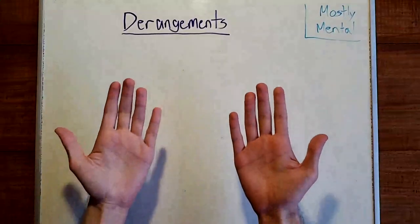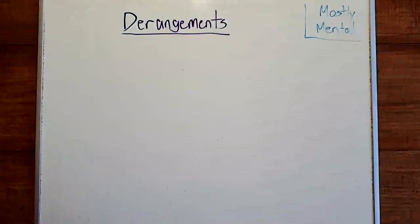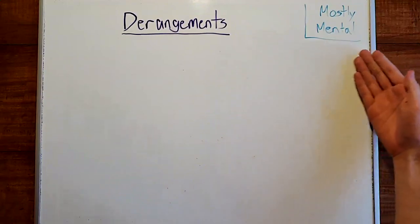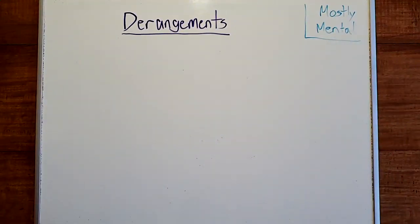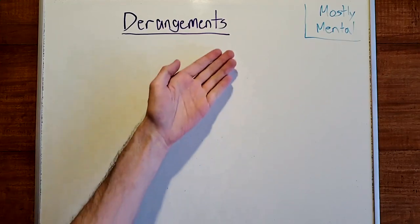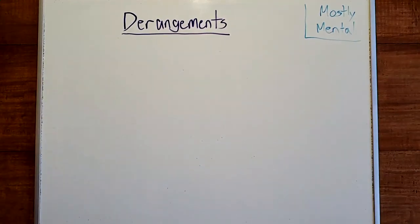Hello, everyone. Foxy here, and welcome to Mostly Mental. Last time in this series on combinatorics, we talked about permutations. Today, I'd like to continue in the same vein with a look at the wonderfully named derangements. And to help me out, I called in an expert. So please welcome my partially deranged friend, Joel.